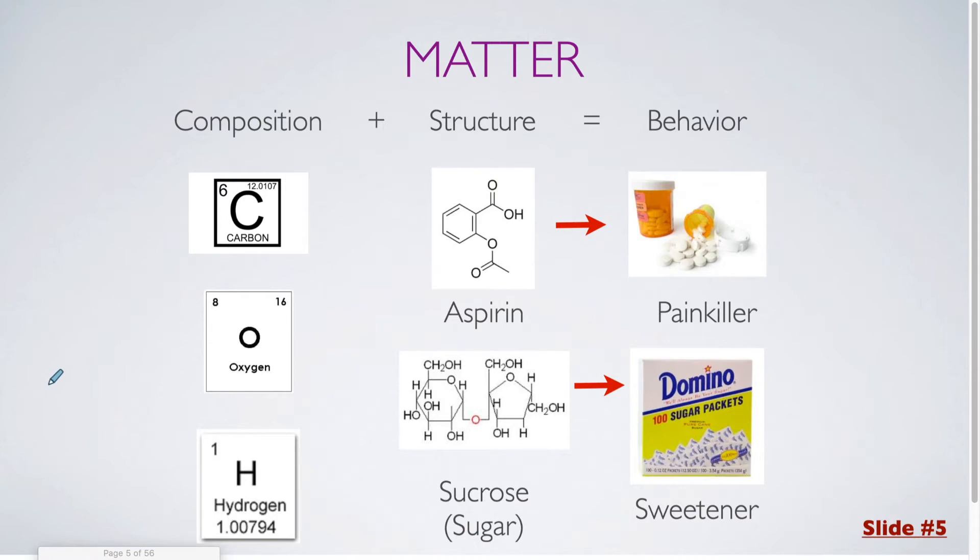Now the same concept could be applied to chemistry in general with atoms. So here we consider two different structures, and the composition for both of these structures is the same. Both are made up of carbon, oxygen, and hydrogen. But the structures are going to be different, so you're going to have a different amount of each of these three basic building blocks put together in a different pattern.